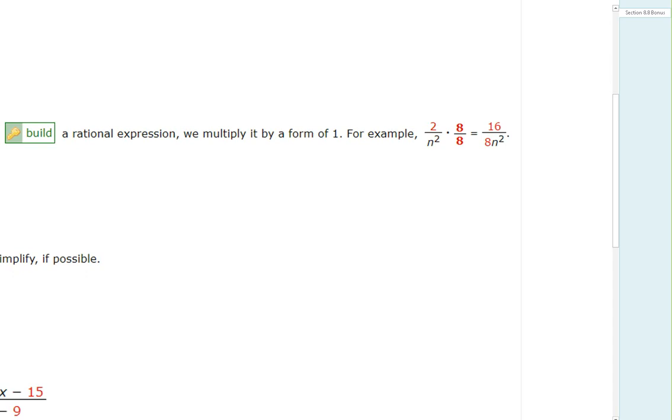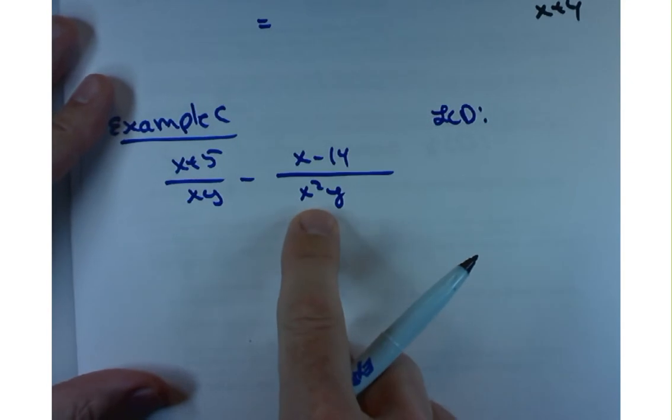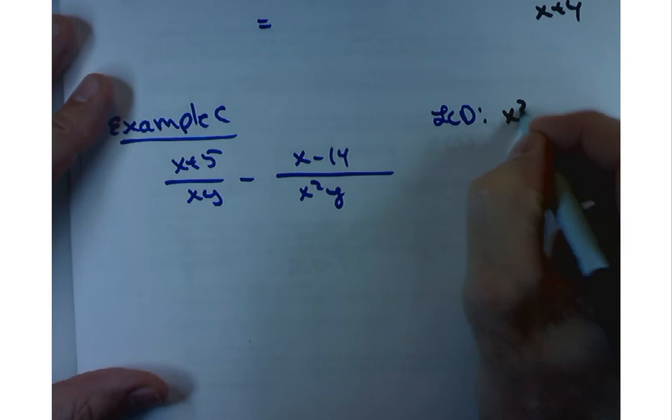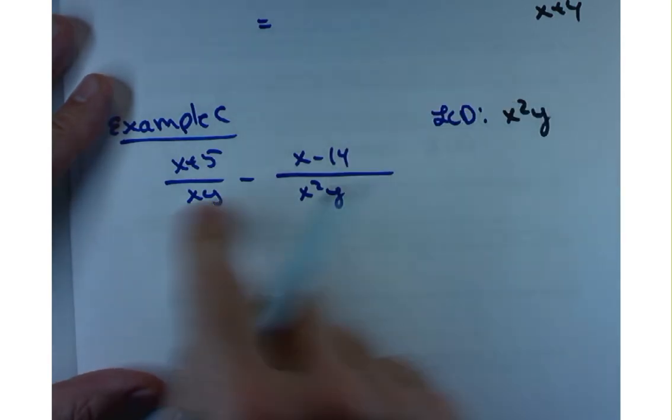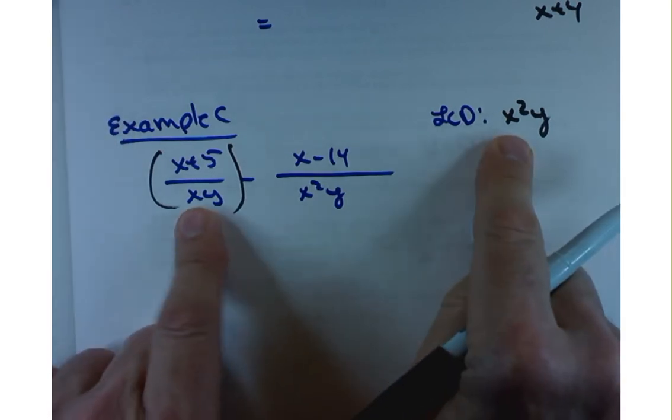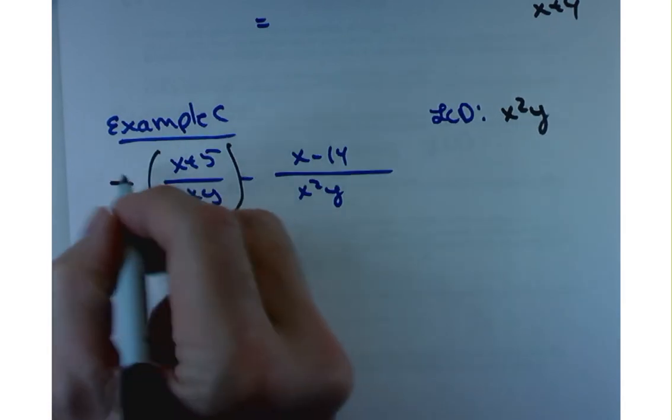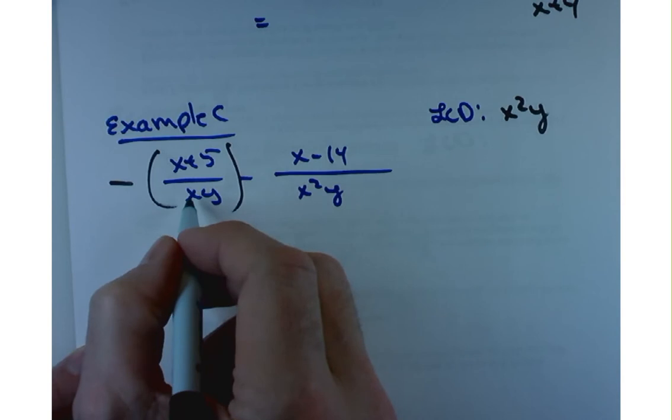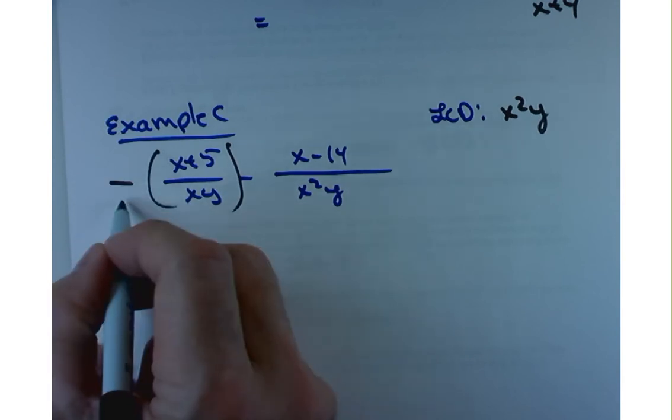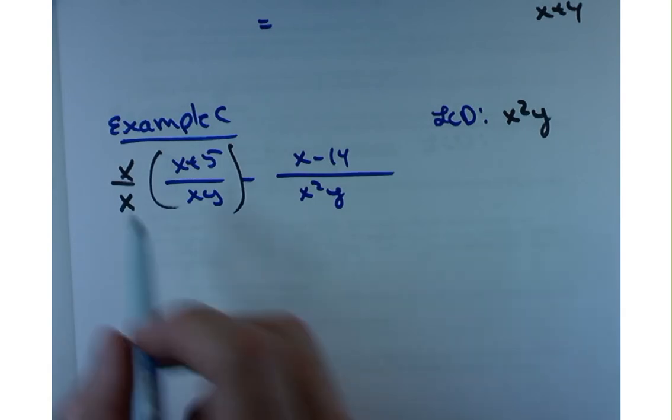If you're trying to build a rational expression, you can only multiply by one. So that's when you can multiply by a number over itself or an expression over itself. And we're going to do that here in example C. The LCD for this is going to be x squared and then y. So I'm okay here, but over here, what am I missing? I'm missing an x squared. So what do I have to multiply by to get that x squared? Just an x. So multiply by x over x.